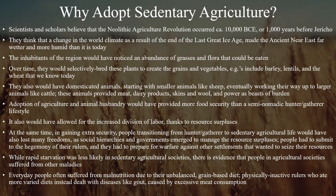Before beginning our discussion of Jericho and Chatalhuyuk, we should briefly outline why the humans of the ancient Near East adopted sedentary agriculture. Scientists and scholars believe that the Neolithic agricultural revolution occurred around the year 10,000 BCE, roughly 12,000 years ago, or about 1,000 years before Jericho emerged as a settlement. They think that a change in world climate, as a result of the end of the last great ice age, made the ancient Near East far wetter and more humid than it is today. The inhabitants would have noticed an abundance of grasses and flora that could be eaten. Over time, these people would have selectively bred these plants to create the grains and vegetables we know today — examples include barley, lentils, and wheat.